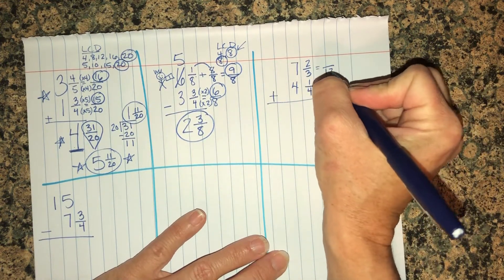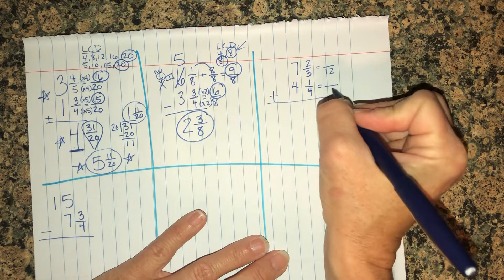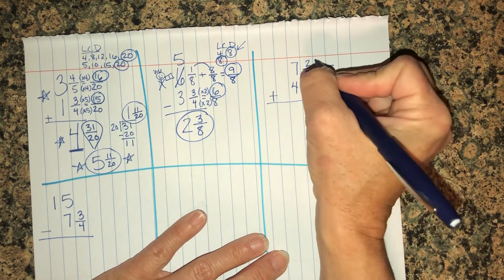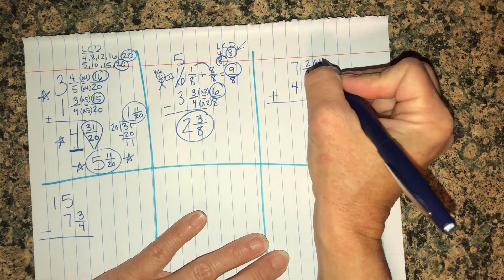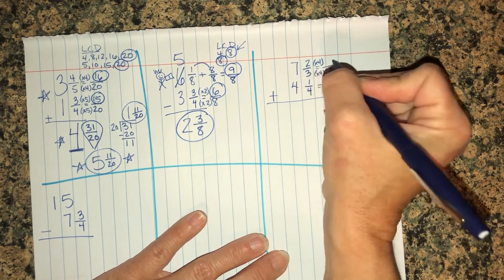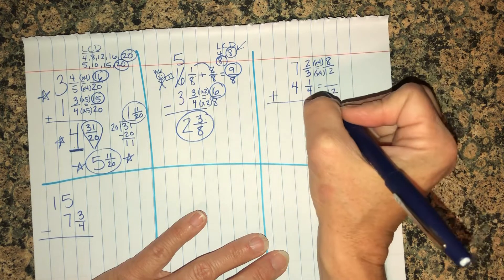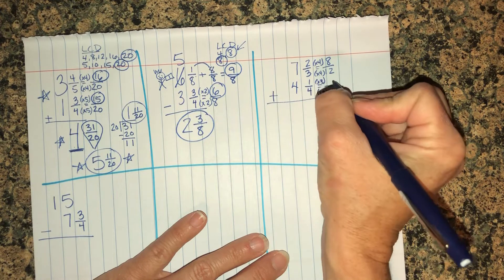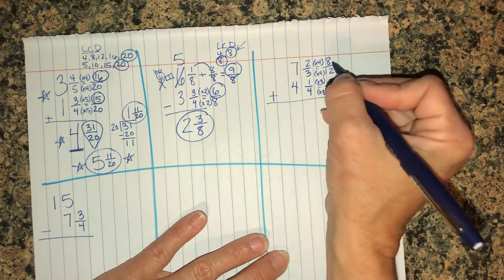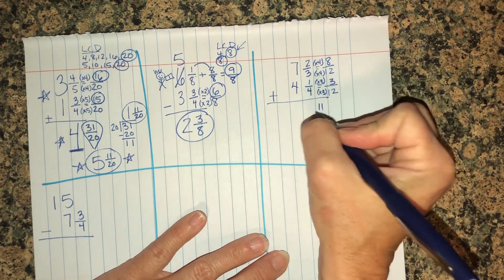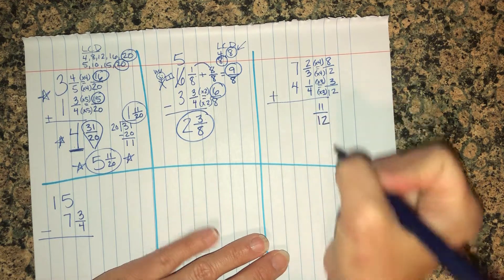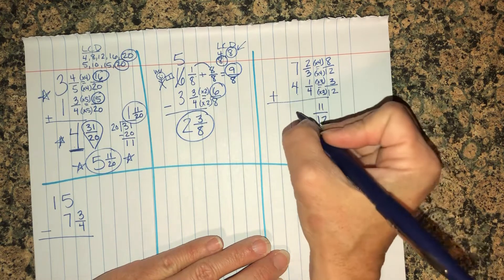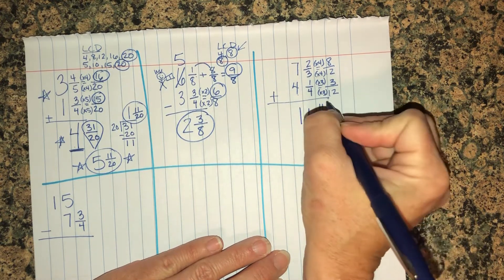I'm going to go this next one a little bit quicker. Three and four, our LCD is twelve. We've done this one a ton. Three times four is twelve. Two times four is eight. Four times three is twelve. One times three is three. Now I add eight and three, I get eleven twelfths. But am I done here? Nope. I gotta add the seven and the four. Don't forget about the big numbers.